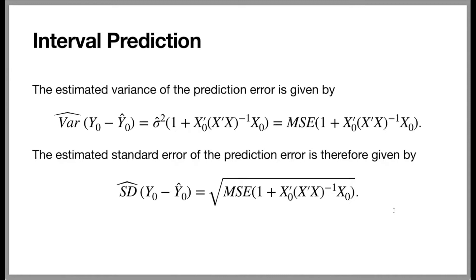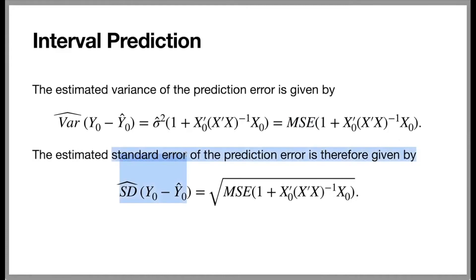We can't calculate the actual variance of the prediction error because we don't know sigma squared, the variance of the error term. But we have an estimate of sigma squared, so we can plug that into the formula. The estimated variance of the prediction error is given by sigma hat squared times 1 plus x 0 prime times the inverse of x prime x times x sub 0. Our estimator for sigma squared is the MSE — the mean squared error — from the ANOVA table for the regression analysis. Taking the square root gives us the estimated standard error of the prediction error.